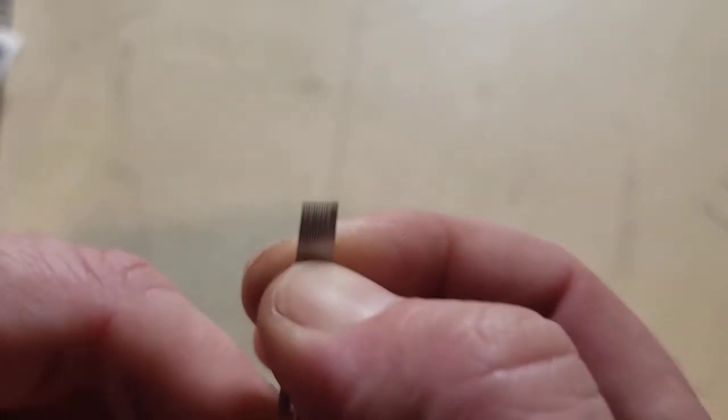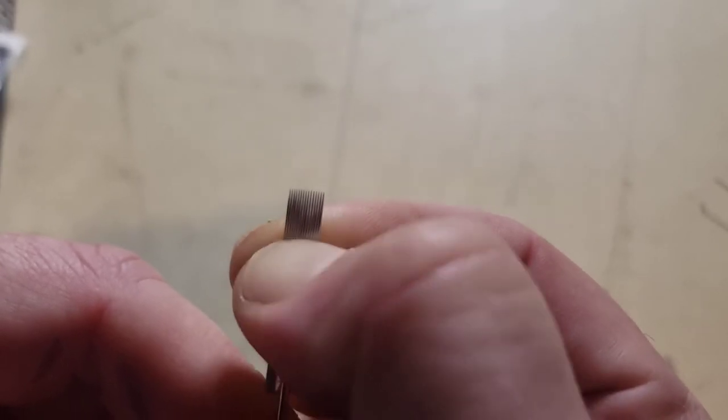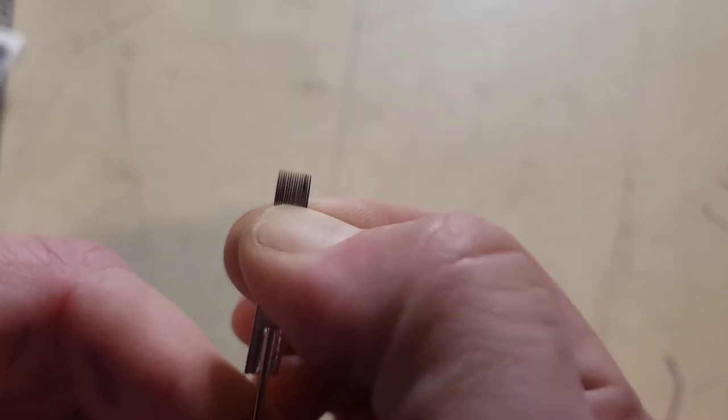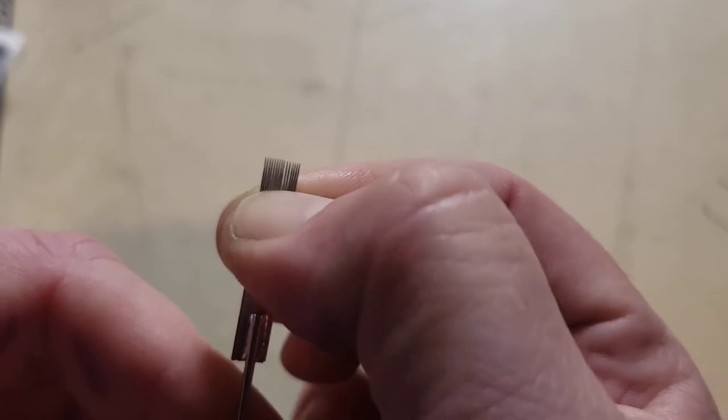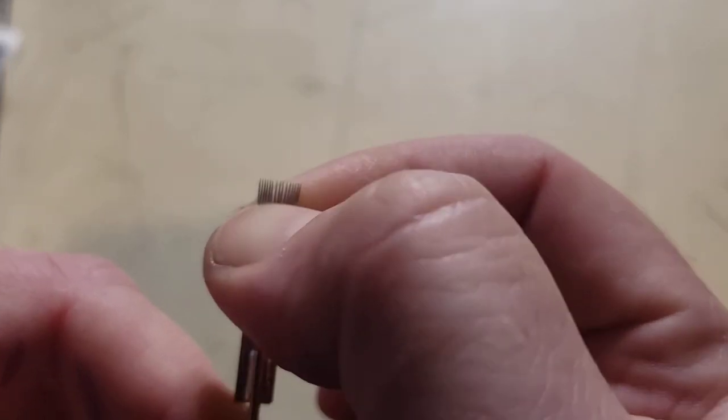Take your thumb and just kind of roll it back and forth along those needles. As close as you can up to the edge of where the solder line is and start fanning them out. You see that? So they start spreading out.